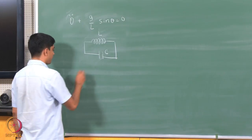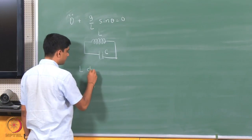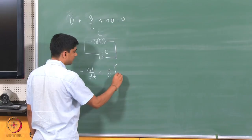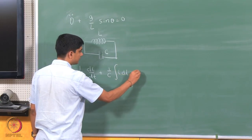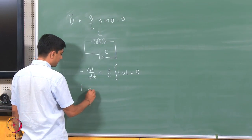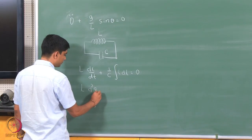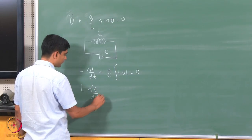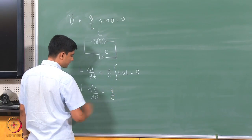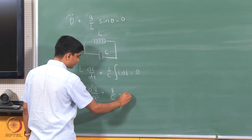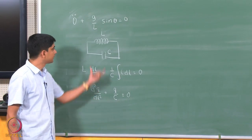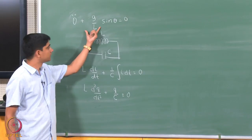If I write down the voltage law, I will have L di/dt plus 1 over C integral i dt equals 0. Or if I write it in terms of the charge, I will have L d²q/dt² plus q over C equals 0. The solution to this will be periodic, in the same way as it will be for the pendulum equation.